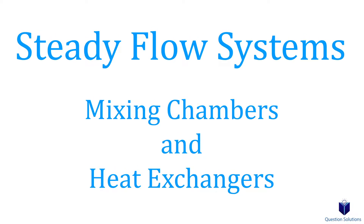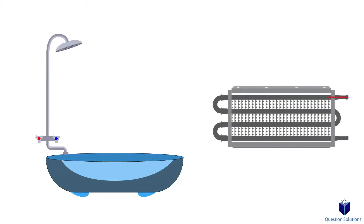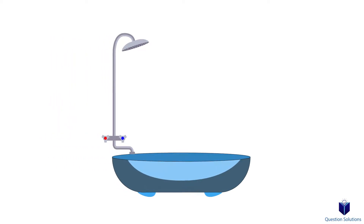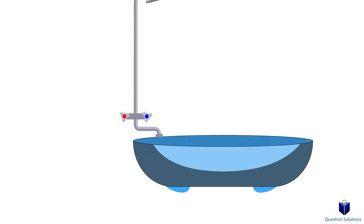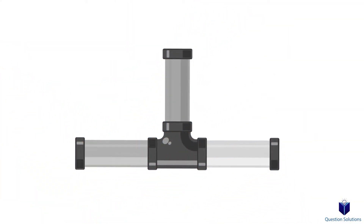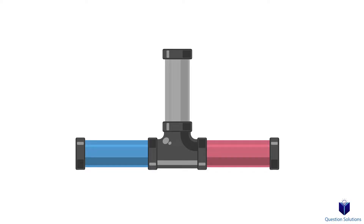Let's talk about mixing chambers and heat exchangers. You've probably encountered both in your daily life. A common example of a mixing chamber is when you take a shower and you turn the knob to get that perfect temperature. Behind the scenes, a valve mixes hot water and cold water together to give you that perfect temperature you desire.